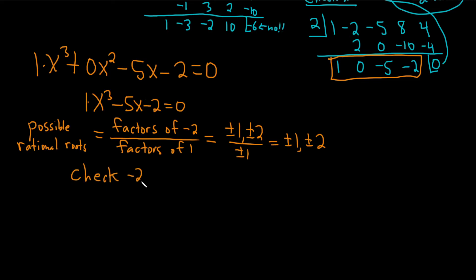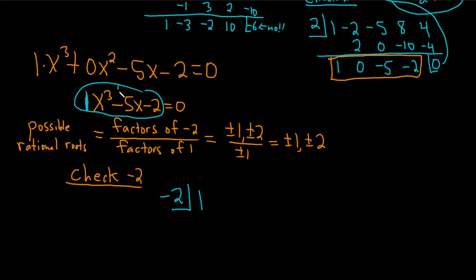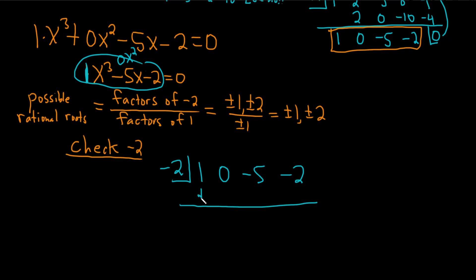Let's check negative 2 on the cubic. Here's the tricky part: there's an invisible 0x squared term that's missing, so you must fill it in. So the coefficients are 1, 0, negative 5, negative 2. Bring down the 1. 1 times negative 2 is negative 2. Add and get negative 2. Negative 2 times negative 2 is 4. Add and get negative 1. Negative 1 times negative 2 is 2. Add and get 0.